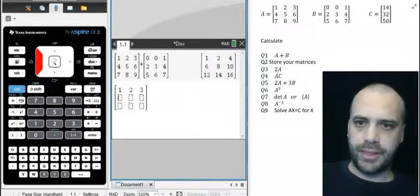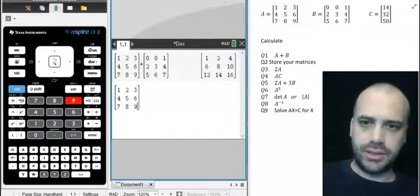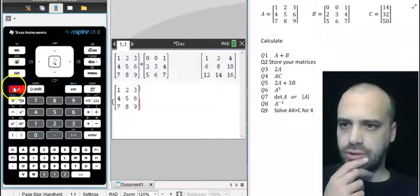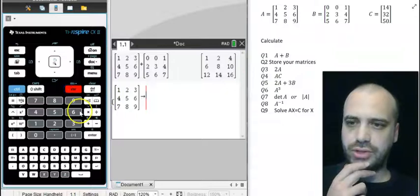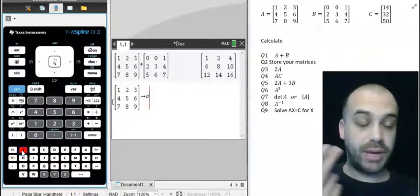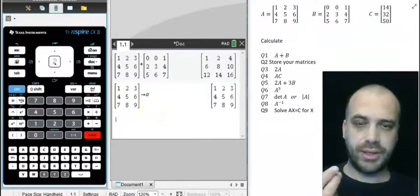One, two, three, four, five, six, seven, eight, nine. And then control, store the matrix. Store it as a variable. I'll call it matrix A because it is matrix A. There.